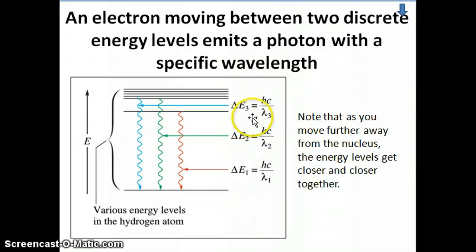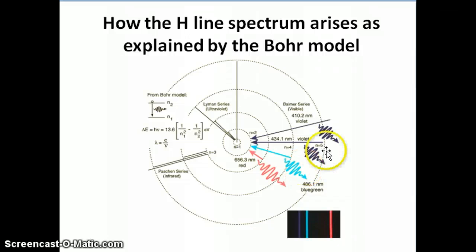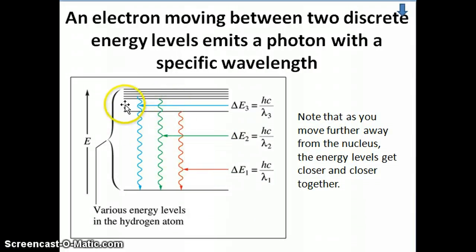One way to represent the emission lines is by drawing this type of transition from a higher to n equals 2, for example, or from higher orbit to n equals 1. But more often, you'll see that people draw it this way as a one-dimensional energy diagram where energy is the vertical axis.